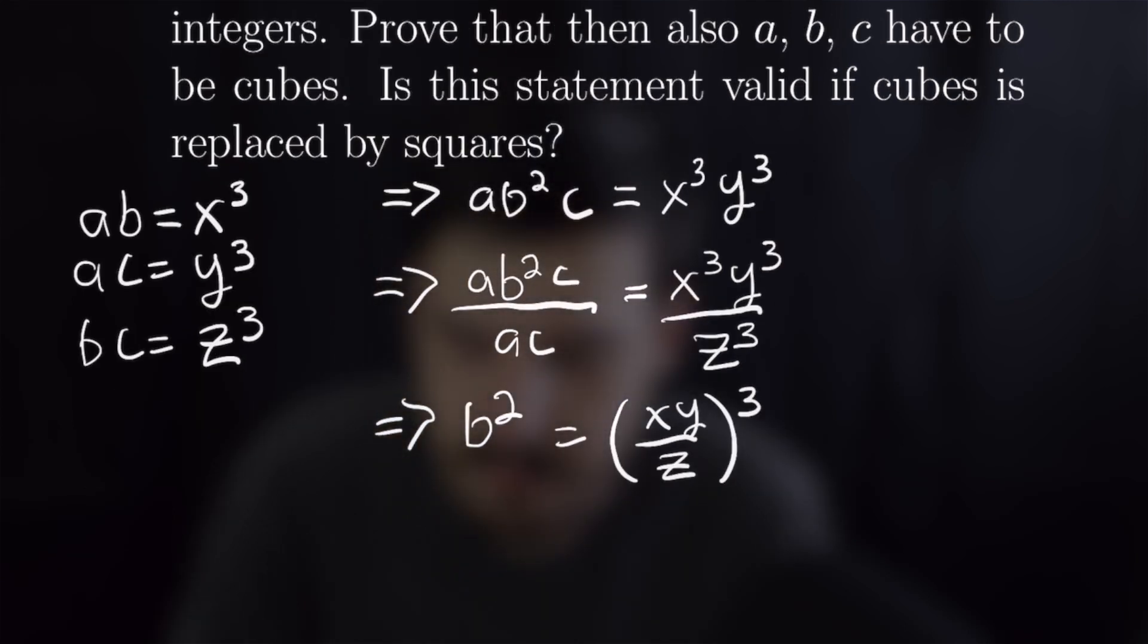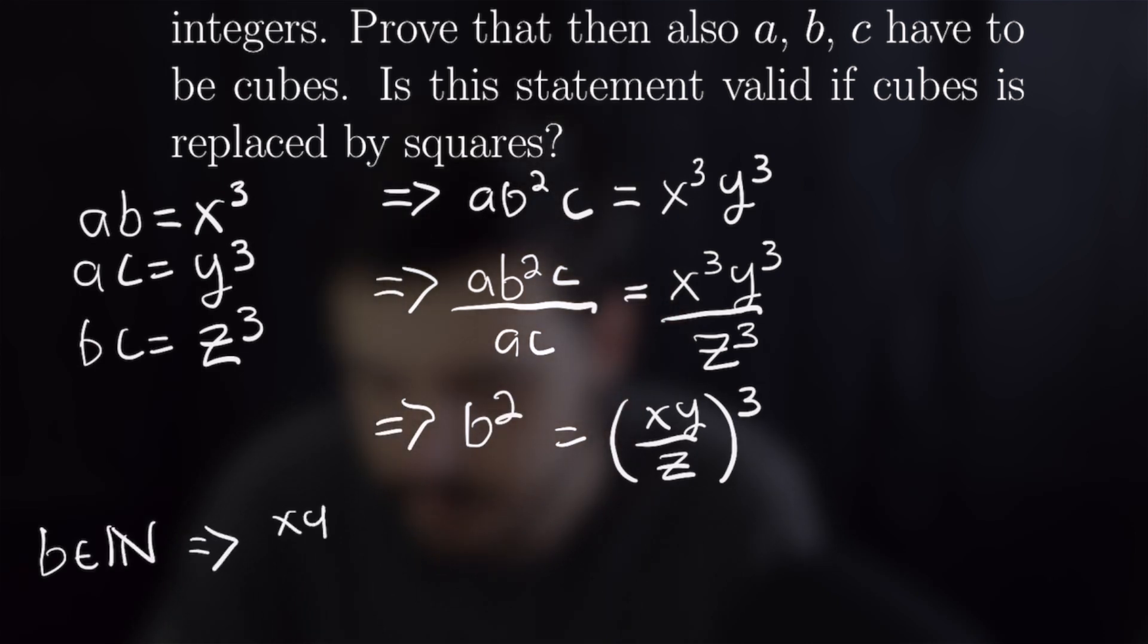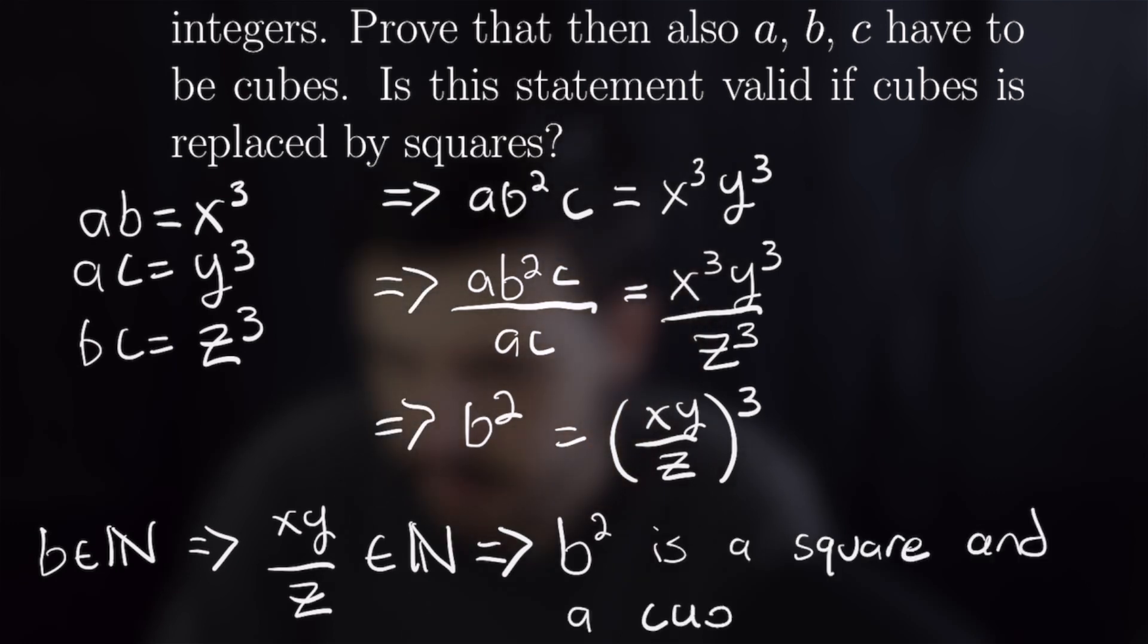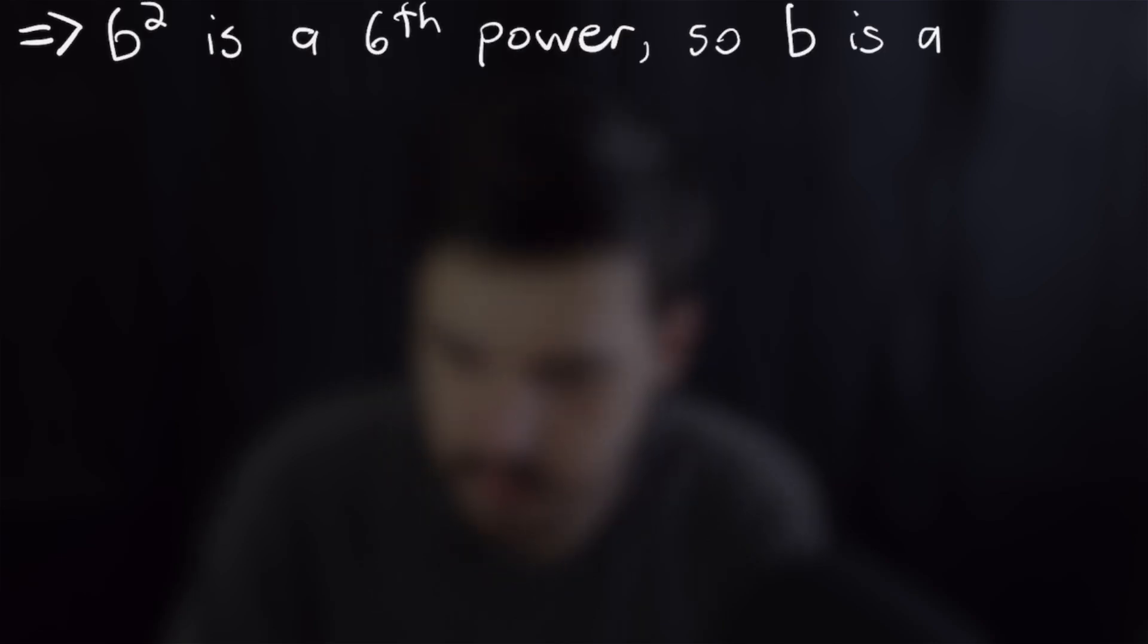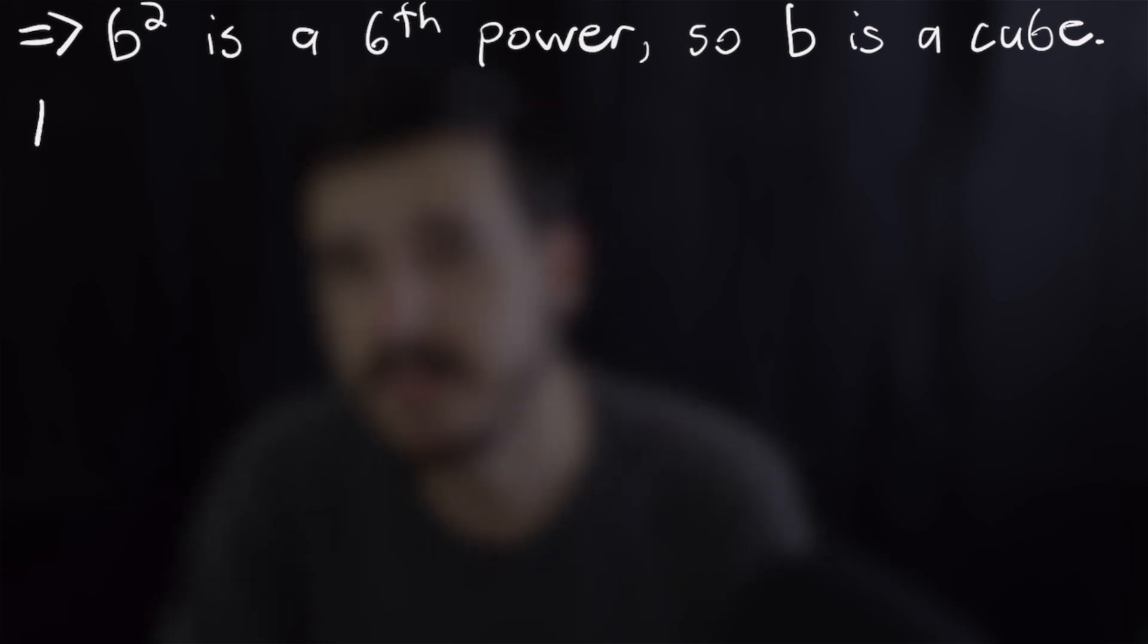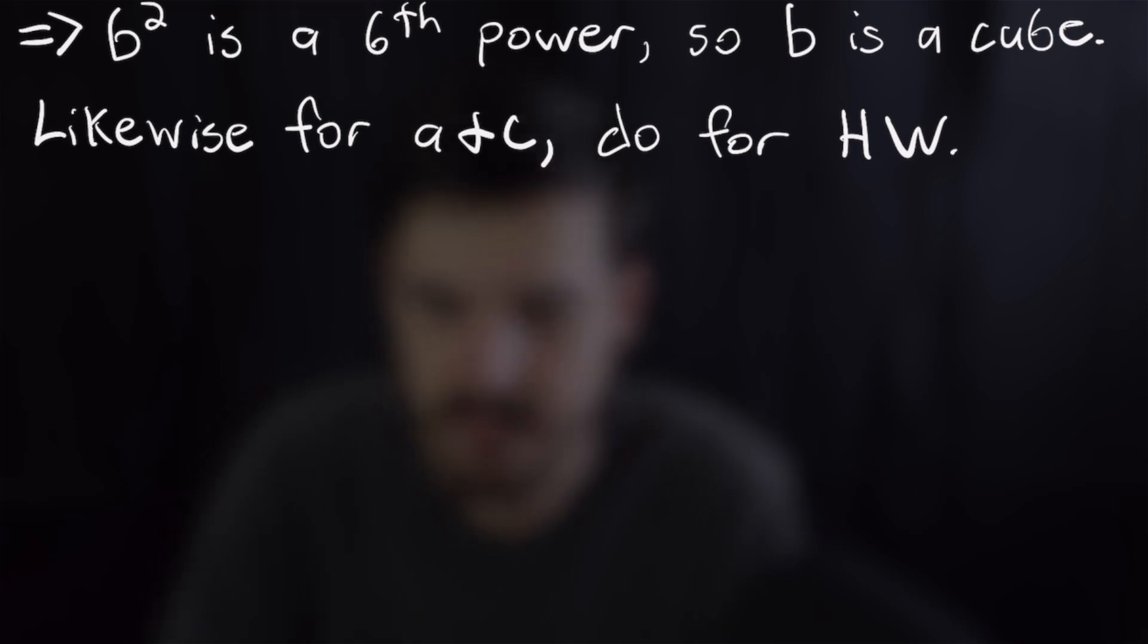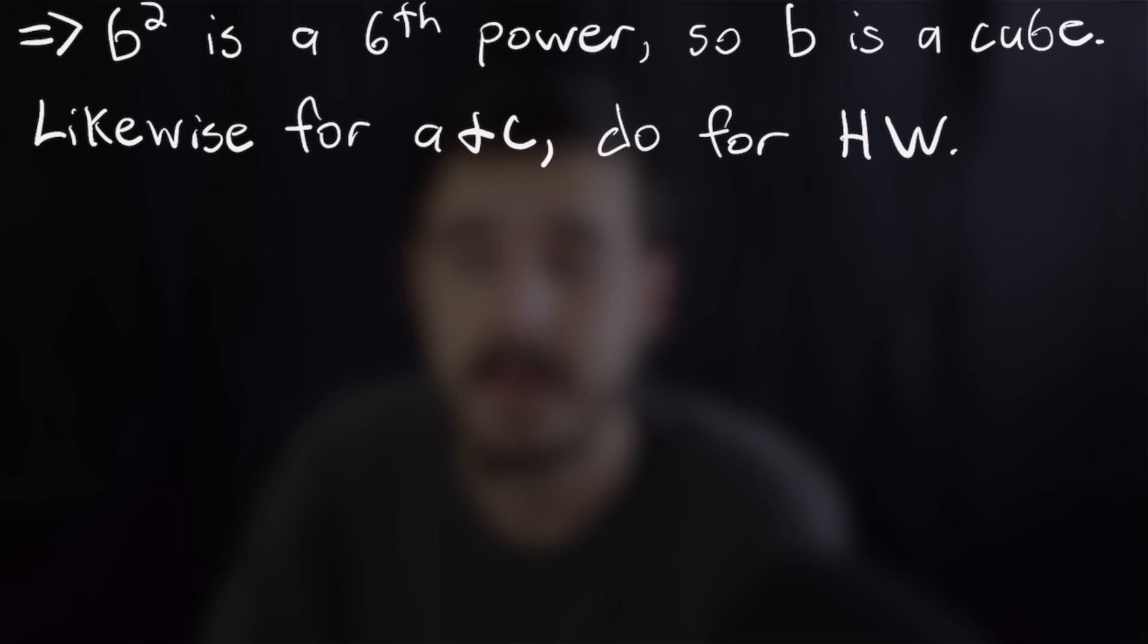Now from this we can see because b is a natural number xz over y must be a natural number and that means that we can conclude that b squared is both a square and a cube. Well if b squared is both a square and a cube then it must be a sixth power which means that we know that b is a cube. We can likewise apply a very similar argumentation to prove that a and c are cubes. Then the question remains is this statement valid if cubes is replaced by squares but I'm going to leave that one for homework so post in the comments if you figured that out and how you got to the answer.